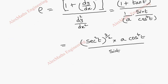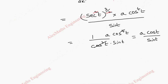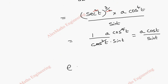Here we can cancel these two terms, so we are left with secant cube t. Taking it to the denominator gives cos³t. In the denominator we also have sin t, and in the numerator we have a·cos⁴t. We can cancel cos³t with cos⁴t, leaving us with a·cos t / sin t. Therefore, the radius of curvature we get is a·cos t.